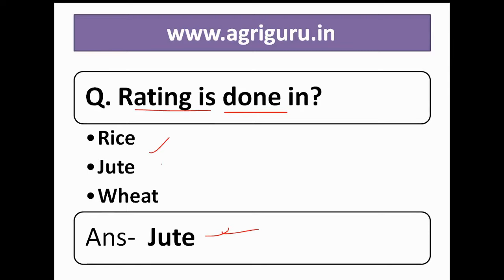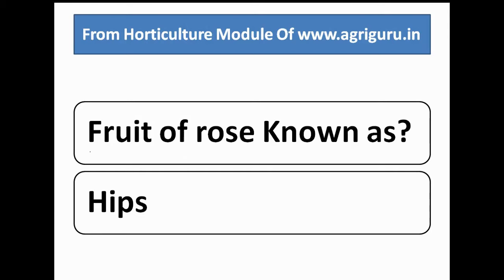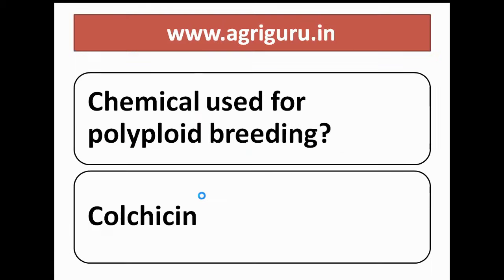Question number 20: the fruit of rose is known as what? It is hips. In the horticulture modules of agriguru.in, we have defined all the flowers and their fruits.